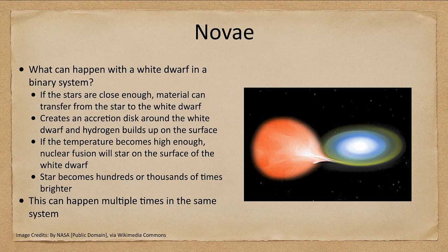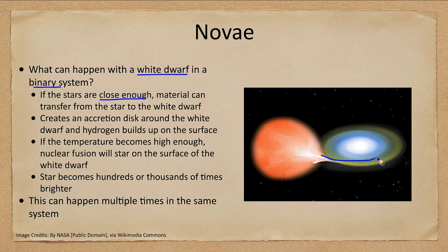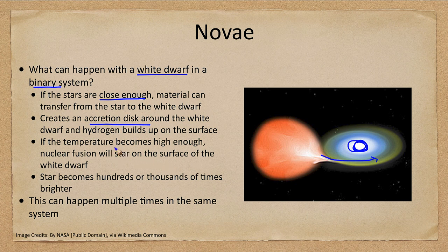Let's start off with the nova. What happens with a white dwarf in a binary system? If the stars are close enough together — if they're far apart, nothing will happen — but sometimes when the ordinary star expands and becomes a red giant, it will end up being close enough that material is pulled from one star to another and begins to form an accretion disk around the white dwarf. The material in the outer layers of the star is hydrogen, so hydrogen builds up on the surface of the white dwarf, and that process continues until the temperature gets high enough that nuclear fusion starts on the surface of the white dwarf.